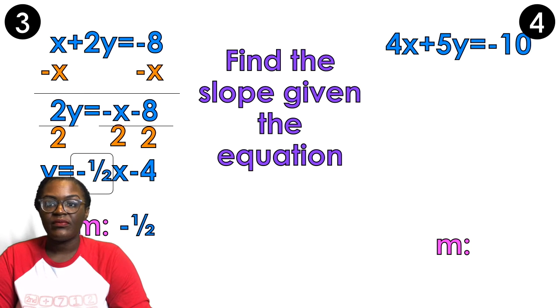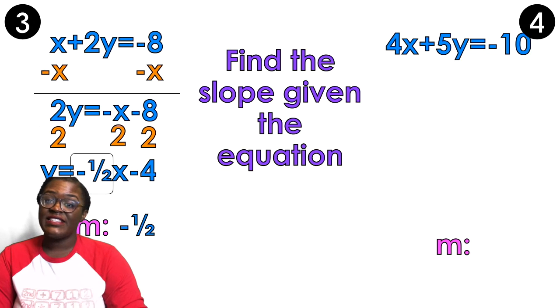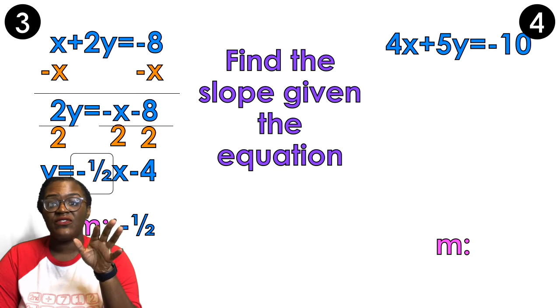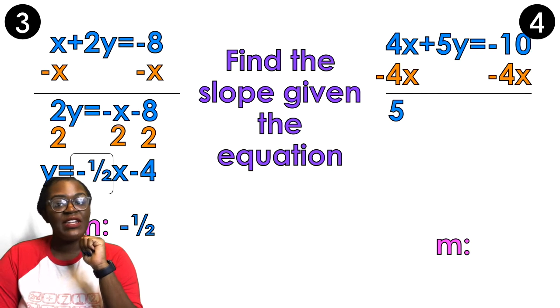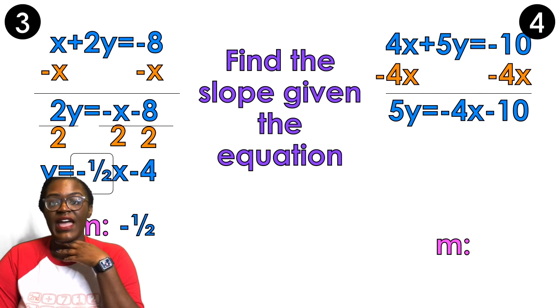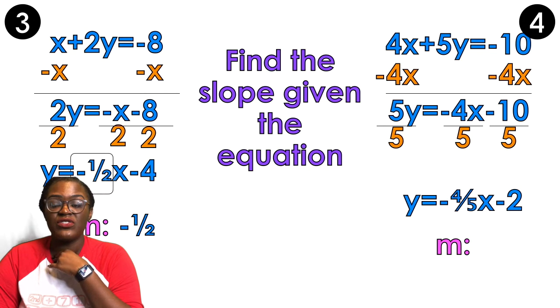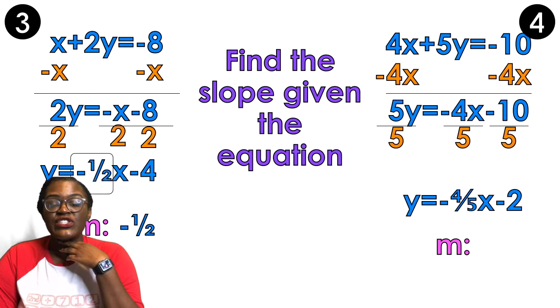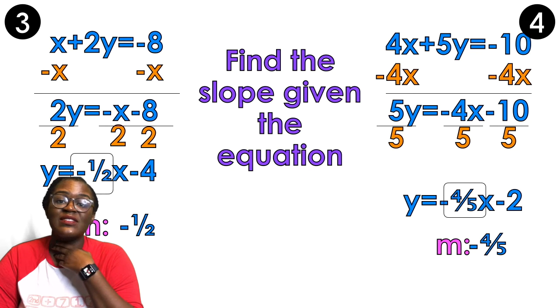So now I have 4X plus 5Y equals negative 10. Again, this equation is in standard form, so I can't tell what the slope is just yet. So I'm gonna isolate Y so that I can figure out what the slope is. So first we're gonna get rid of the 4X. So subtract 4X on both sides. And when I do that, I'm gonna get 5Y equals negative 4X minus 10. I'm gonna divide everything by 5. So I'm gonna get Y equals negative 4 fifths X minus 2. 4 divided by 5 is 4 fifths, and then 10 divided by 5 is 2. Don't forget your negative signs. So the number touching the X is going to be my slope. So negative 4 fifths is my answer.